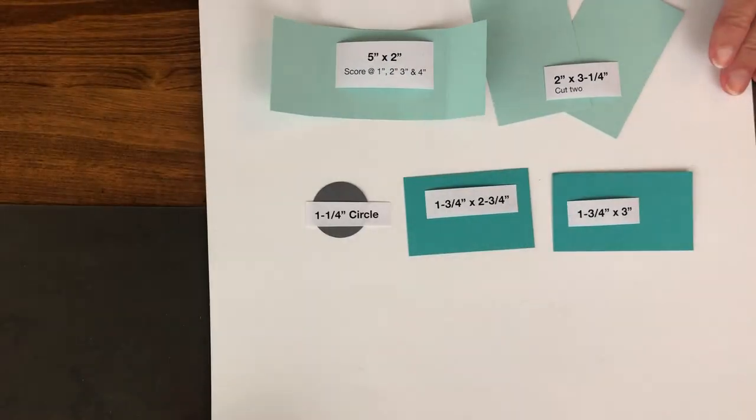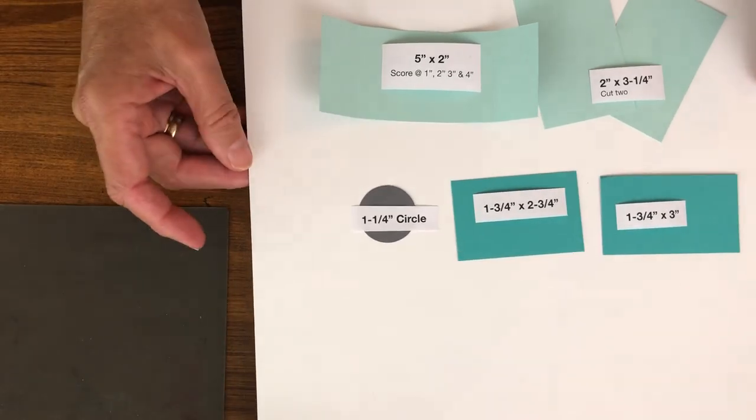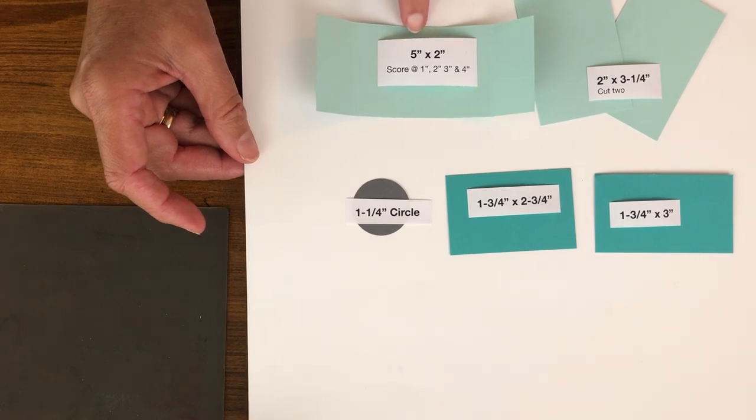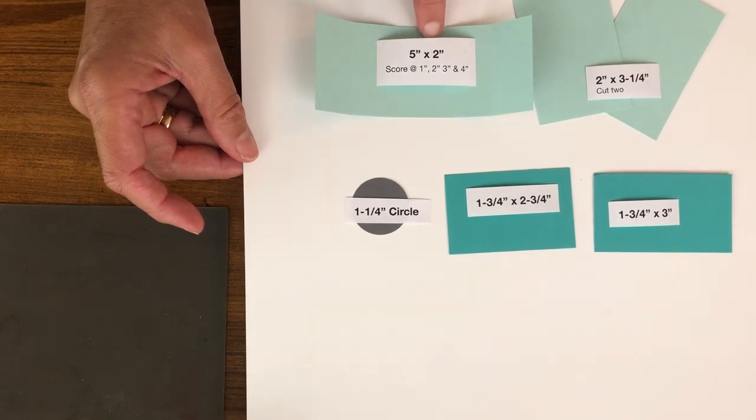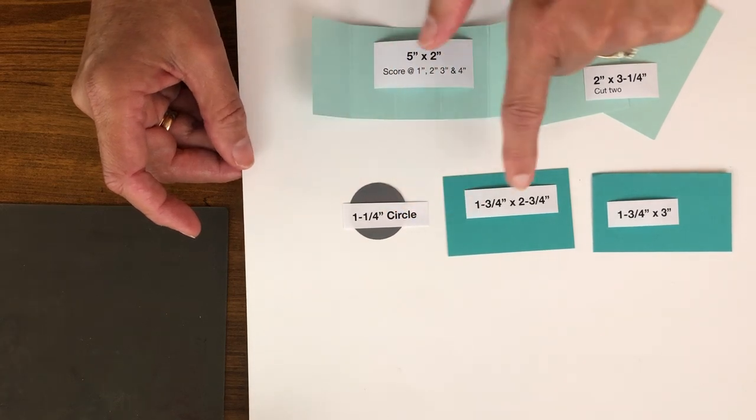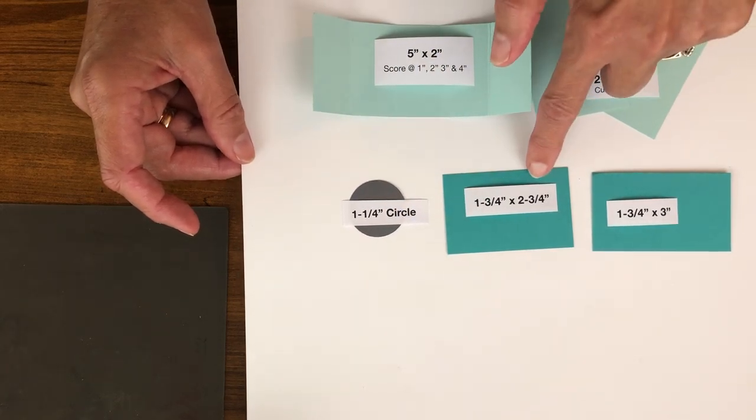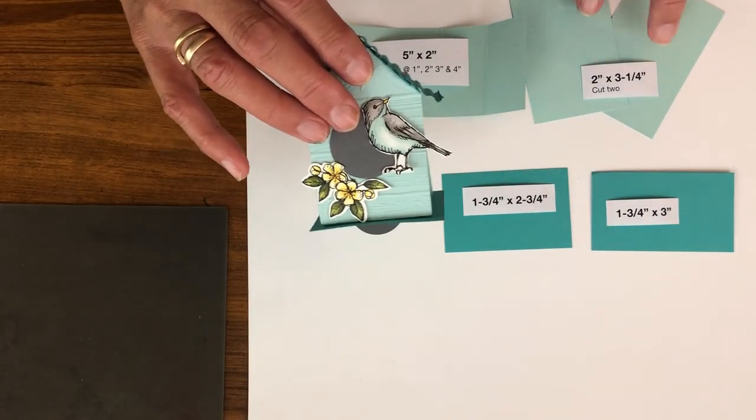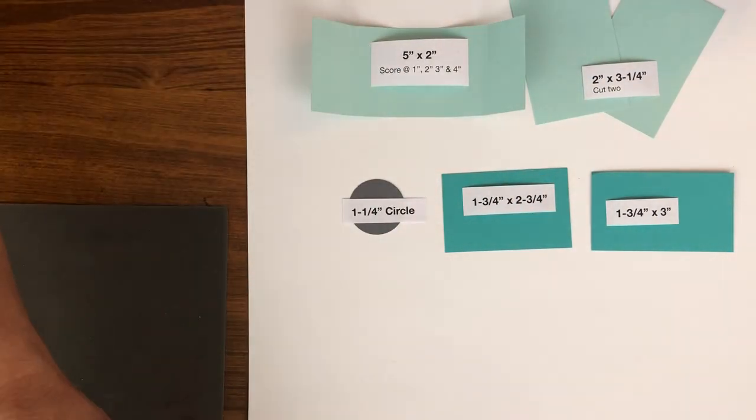These are the pieces of paper that I'm using. So I have this is my first piece and that's going to be scored at every inch. Then I have my one and a quarter inch circle punch for the birdhouse. I have a base for the birdhouse, a roof, and then the front and back.